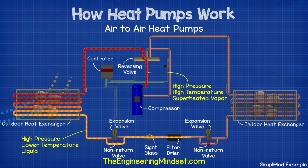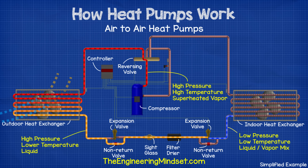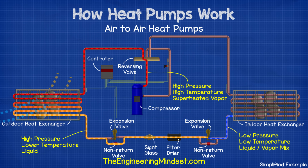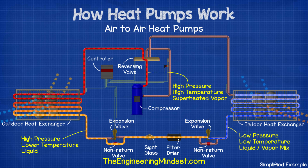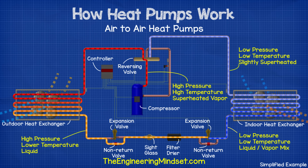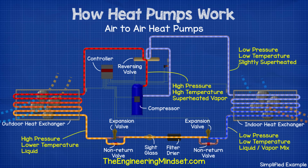It then passes through the sight glass and the bidirectional filter dryer. The next non-return valve is then closed, so the refrigerant passes through the expansion valve. As it passes through the expansion valve, the refrigerant changes to a part liquid, part vapor mixture, which causes it to drop in pressure and temperature. It then flows into the indoor heat exchanger, where a fan blows the warm indoor air over the coil. This causes heat to transfer from the air into the refrigerant, so the refrigerant boils and takes this heat away. The refrigerant leaves the indoor unit as a low pressure, low temperature, slightly superheated state, and flows into the reversing valve, which diverts it back to the compressor to repeat the cycle.